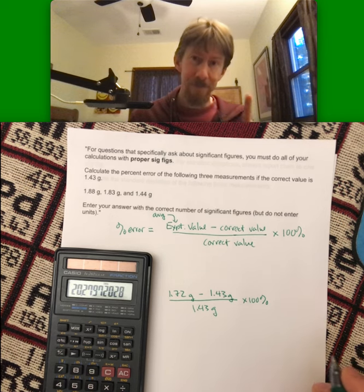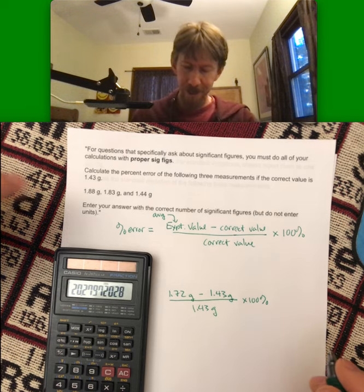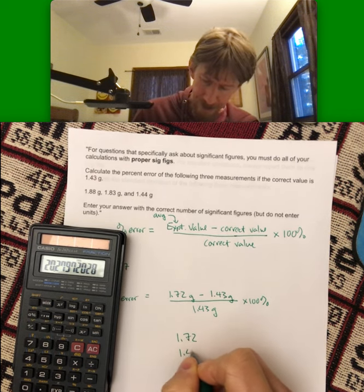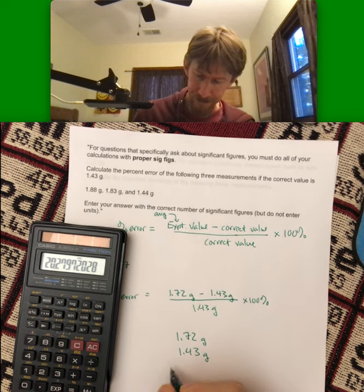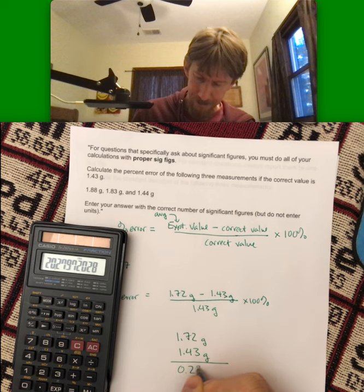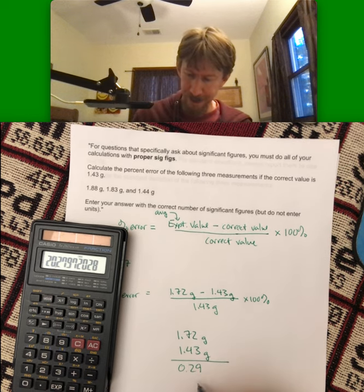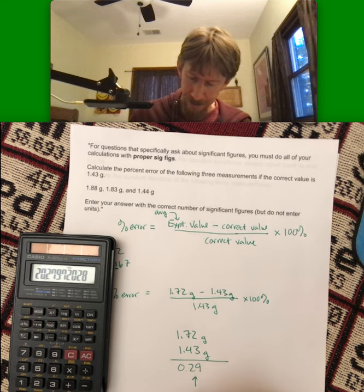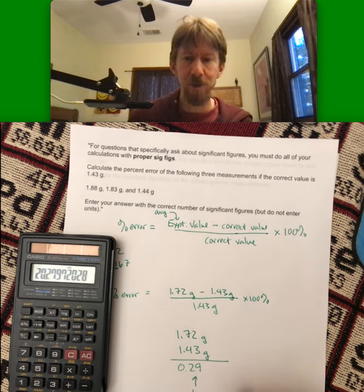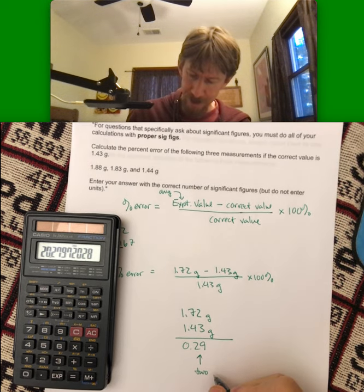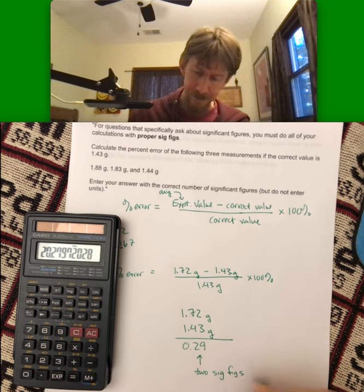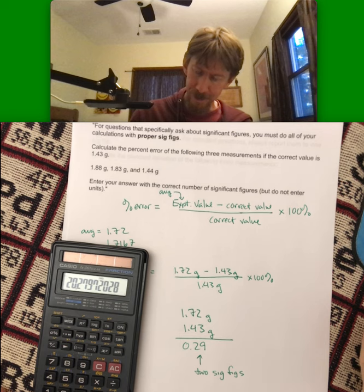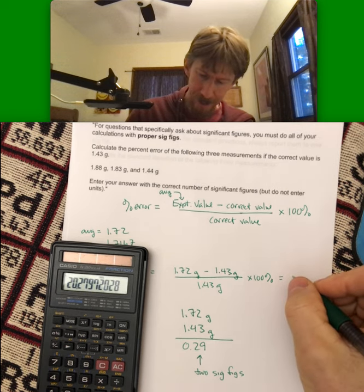We're doing subtraction. So I'm going to stack them up. And I get 0.29 and regardless of which value I used here my answer needs to have two sig figs and my answer of 20.2 is really going to be 20 percent.